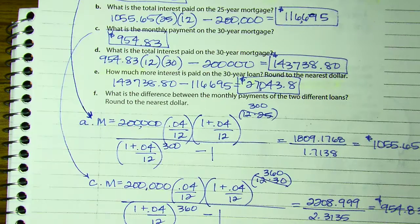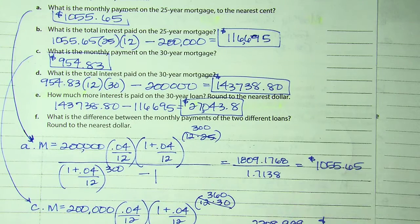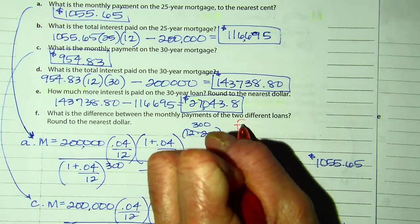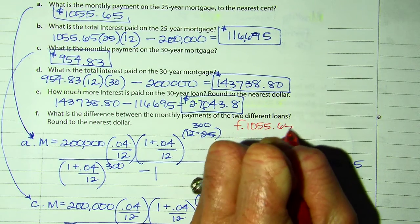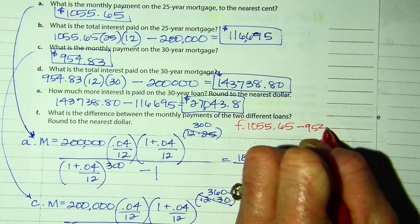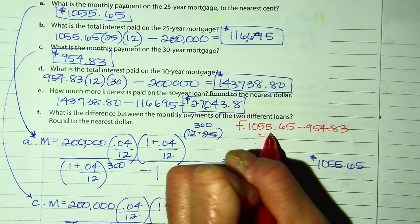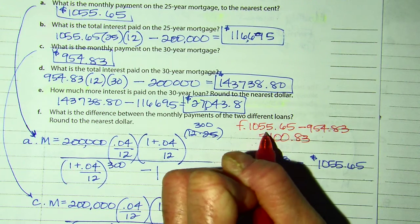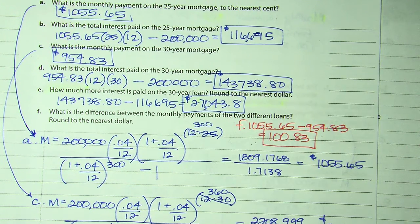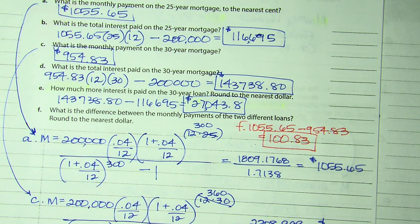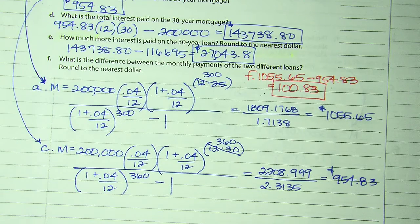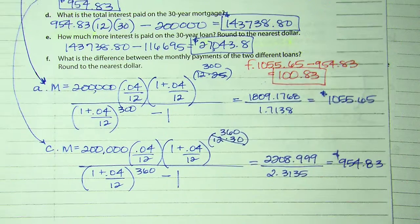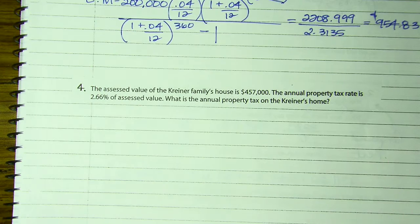Part E: how much more interest? You would take the two amounts and find the difference: $143,738.80 minus $116,695 — a total difference of $27,043. So they would pay way less in interest with the shorter loan. Part F: what is the difference between the monthly payments? The 25-year payment was $1,055.65; the 30-year payment was $954.83. So if you subtract those, it was only a difference of $100.83. It's worth it to pay a little bit more per month, be done five years earlier, and save almost $30,000. Get the shorter loan — overall, you'll spend more money with the longer one.